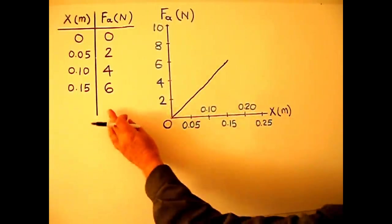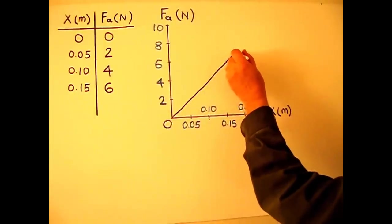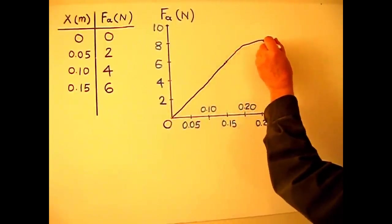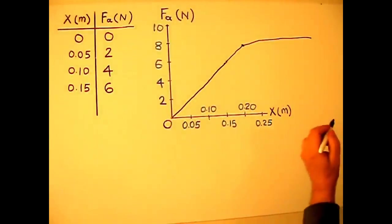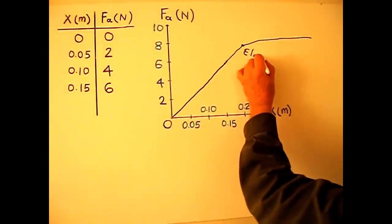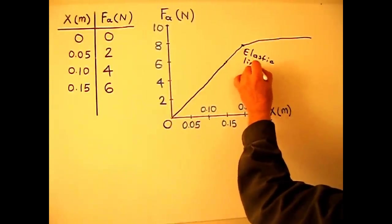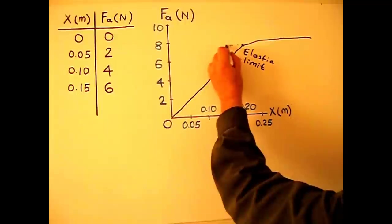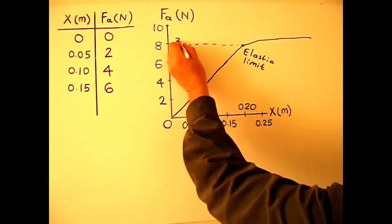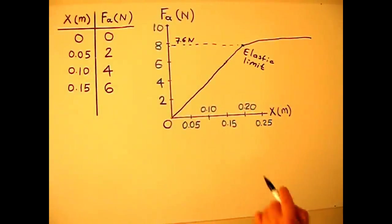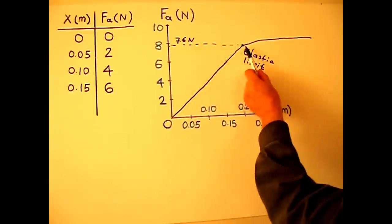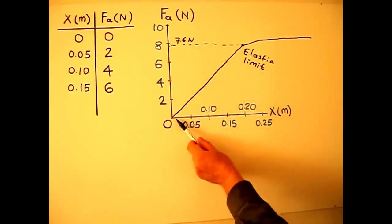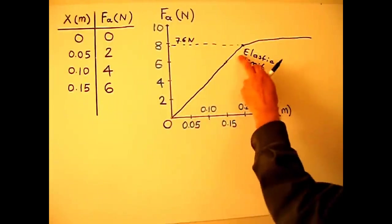Beyond this, let's assume we continue our experiment. The graph goes linear. After some point, it is not linear anymore. Until here, it is linear. This point is called elastic limit. If we go here, let's say this is 7.6 newtons. If we apply more than 7.6 newtons, then the spring gets deformed.